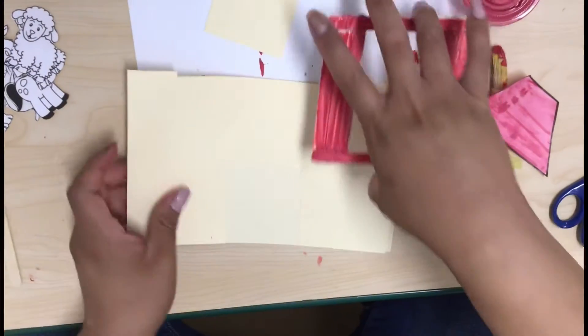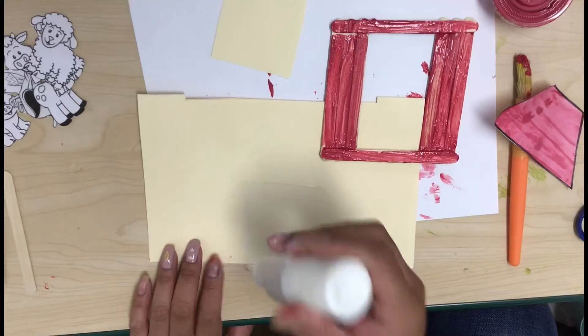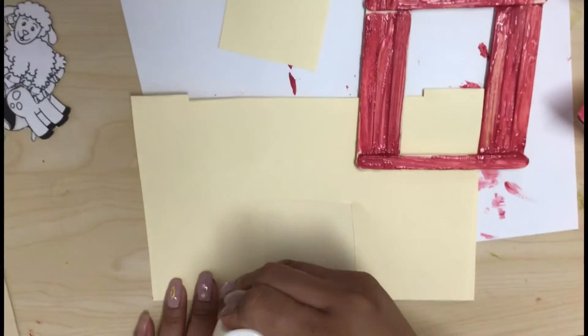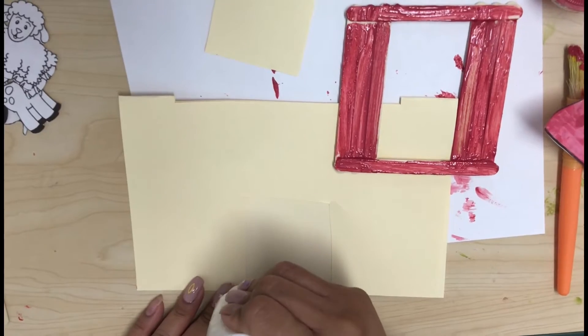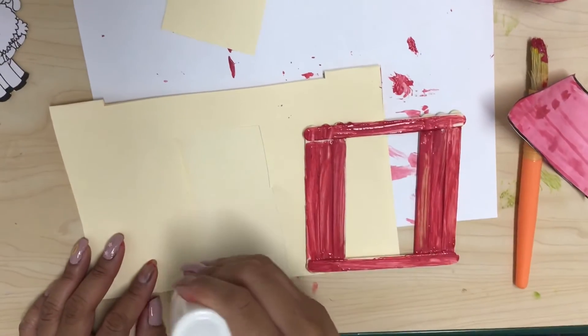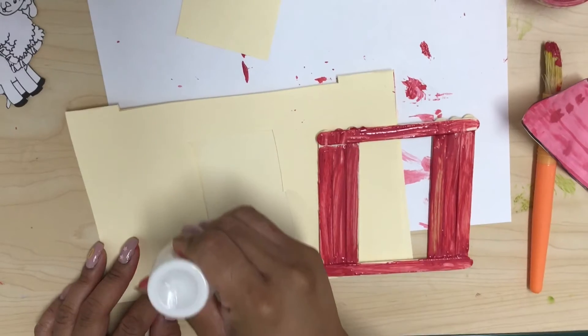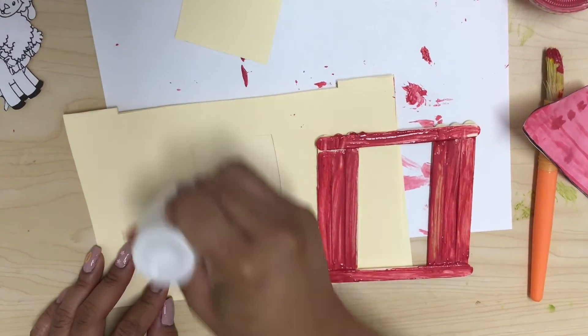Now we're going to take some glue. Once we cut out our door we're going to take our glue and add it around the door.